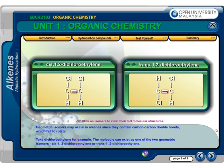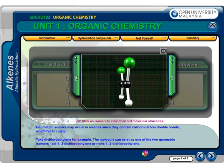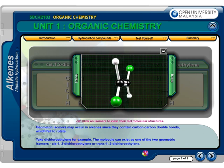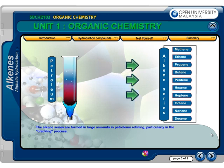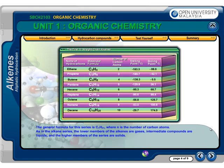Geometric isomers may occur in alkenes since they contain carbon-carbon double bonds, which fail to rotate. Take dichloroethylene, for example — the molecule can exist as one of two geometric isomers: cis-1,2-dichloroethylene or trans-1,2-dichloroethylene. The general formula for the alkene series is CnH2n, where n is the number of carbon atoms.